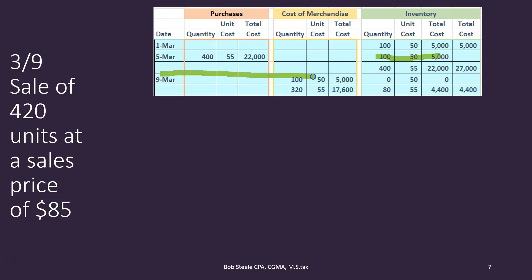We want all of our activity in this new box under this date range. We're going to say that of the 100 units at $50, we sold all 100 of those for $5,000. To get to the 420 units total we need another 320 units, which we must have sold out of the 400 units at $55. So 320 units at $55 gives us $17,600. The $5,000 plus $17,600 gives us the total cost of goods sold. What do we have left? Of the original 100 units we sold all 100, leaving 0 units at $50. Of the 400 units at $55 we sold 320, leaving 80 units at $55 for a remaining balance of $4,400.